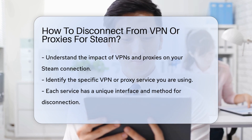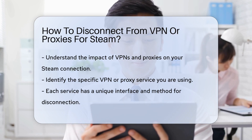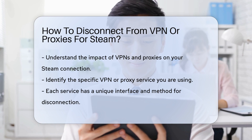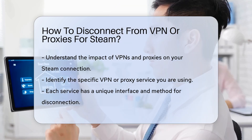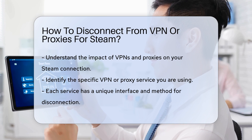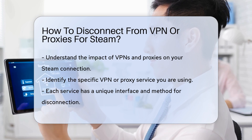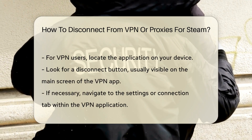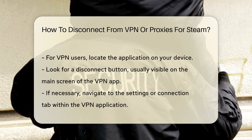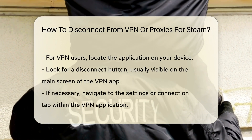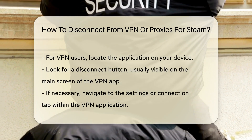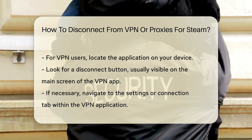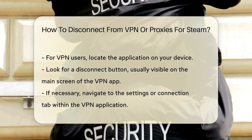First, identify the VPN or proxy service you are using. This is crucial as each service has its own interface and method for disconnection. If you are using a VPN, locate the application on your device. Open the application and look for a disconnect button, which is often prominently displayed on the main screen. In some cases, you may need to navigate to a settings or connection tab within the VPN application, where you can find options to disconnect from the current server.